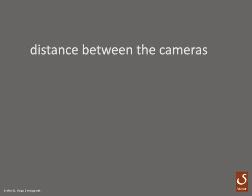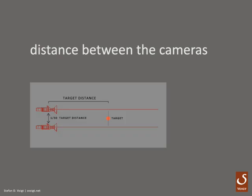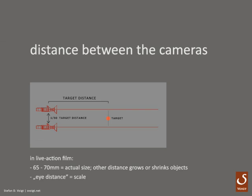Now the distance between the two cameras also stands in relation to your target distance. A rule of thumb is to divide the distance by 30, because this gives the most realistic depth impression. But you can also divide by 60 when you are using long lenses or your stereo effect is too strong. In live-action film you should use 65 to 70 mm because this is the average distance human eyes have. Other distances are growing or shrinking objects. So in live-action film the eye distance is somewhat the scale, while in 3D it's relative and depends on how big you build your scene.